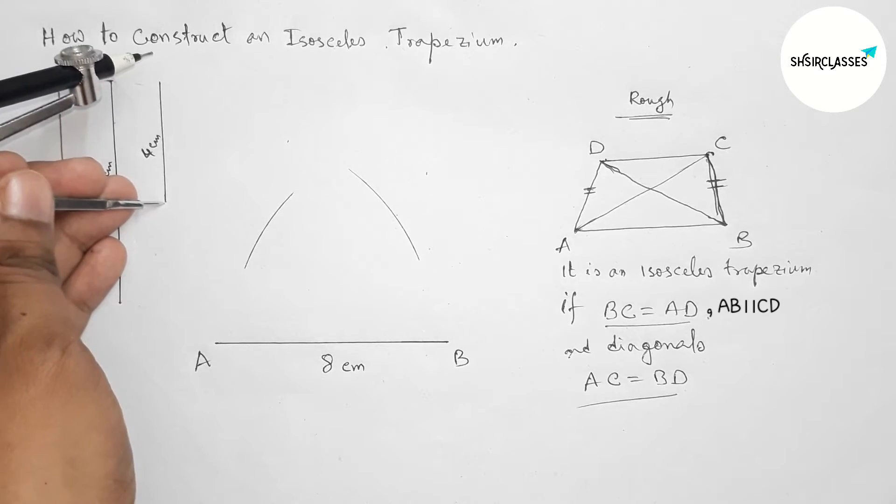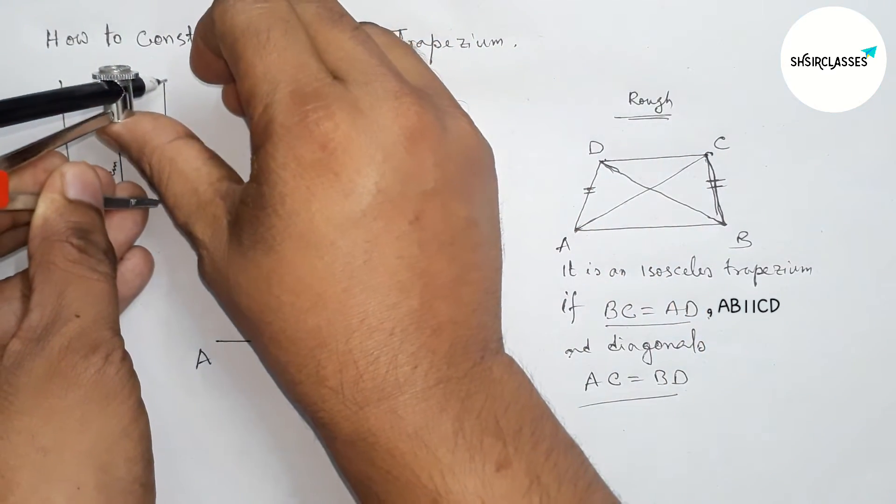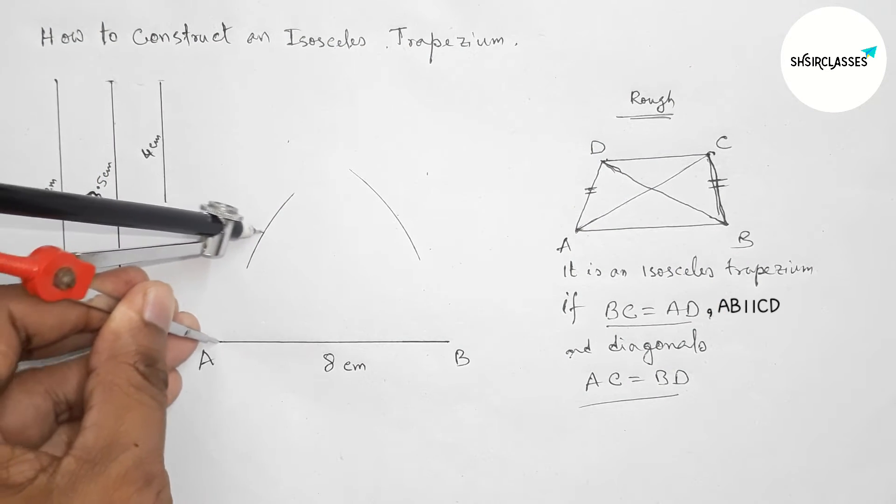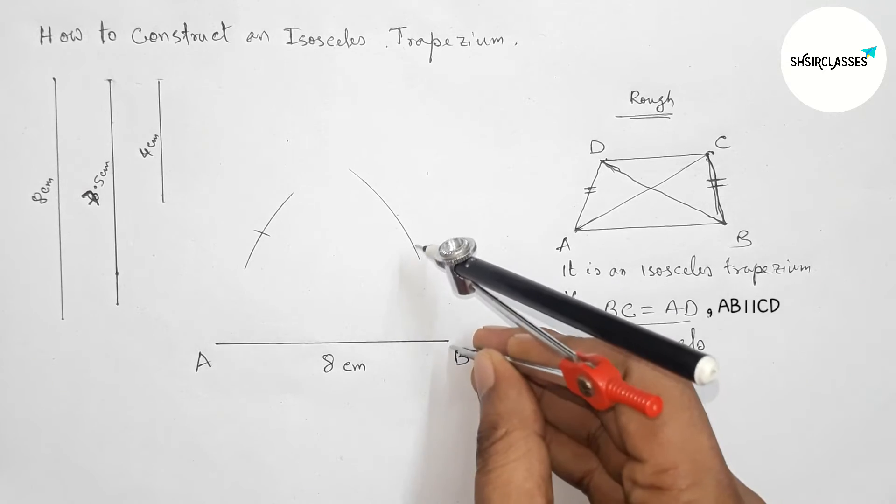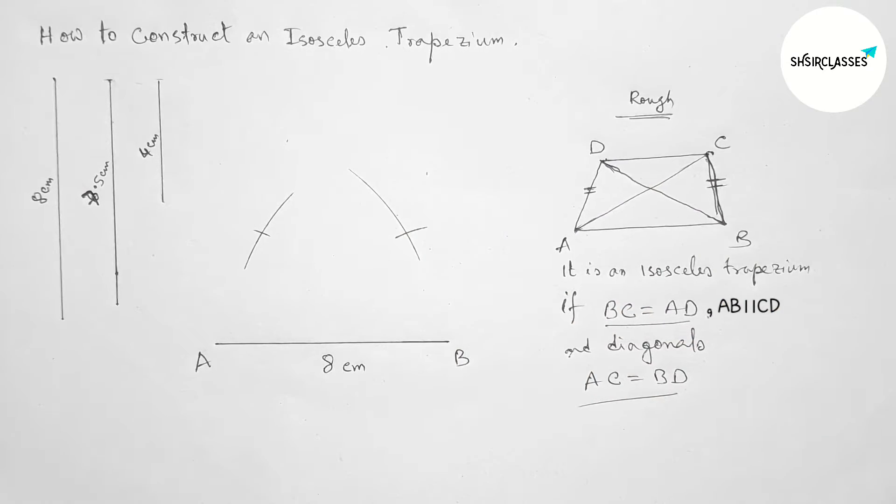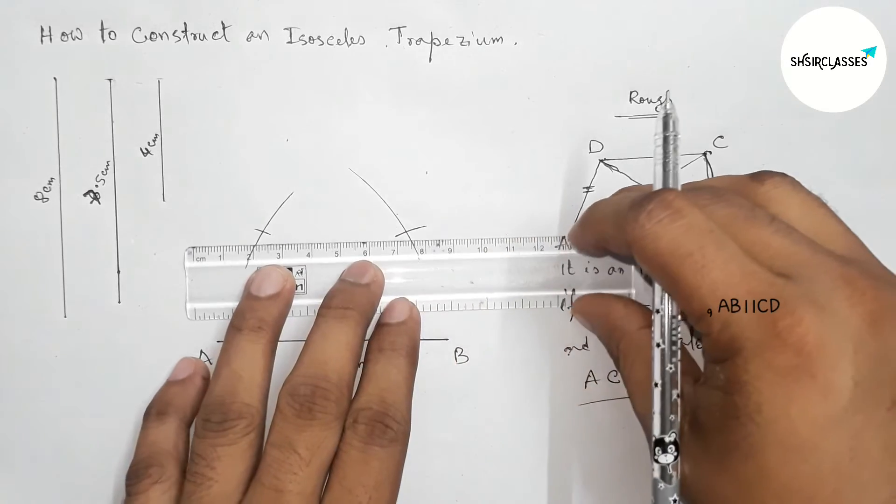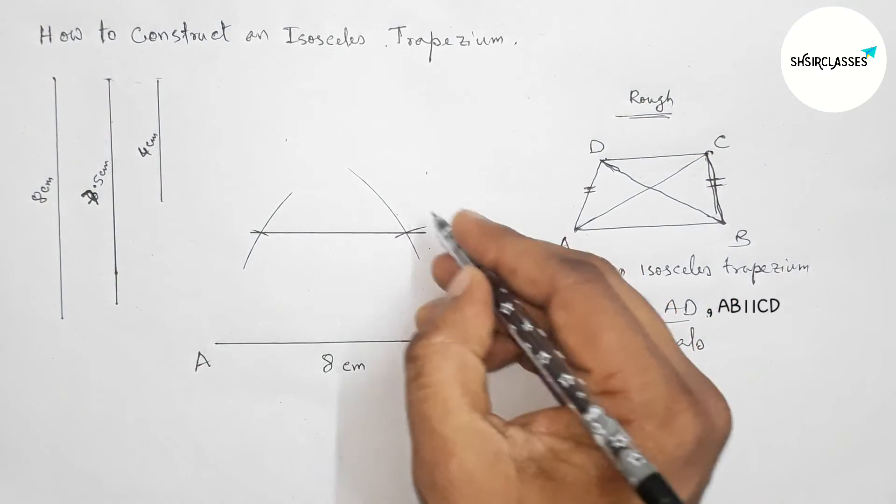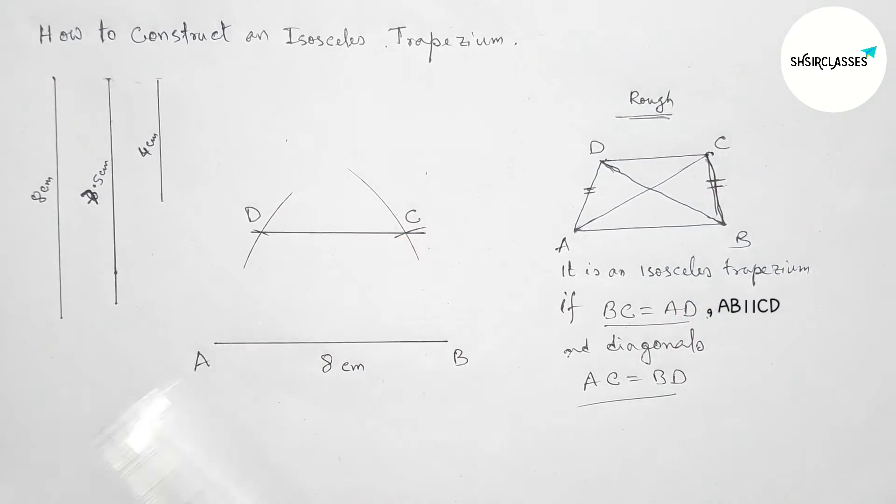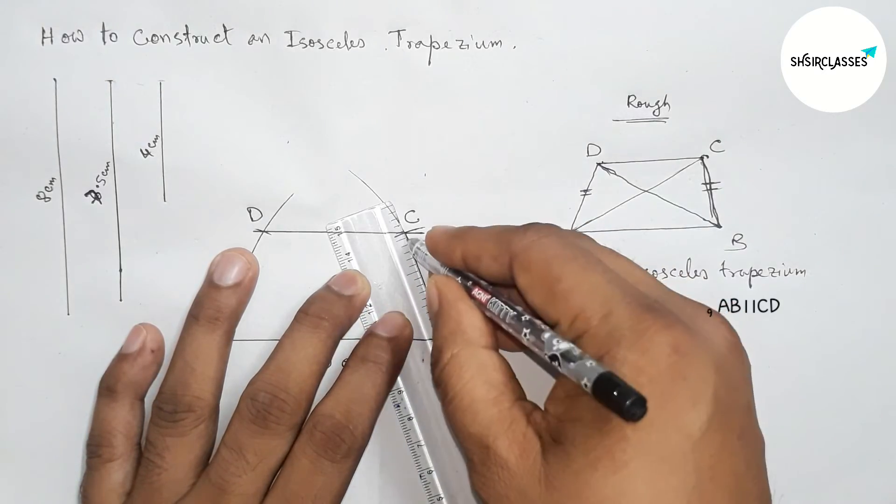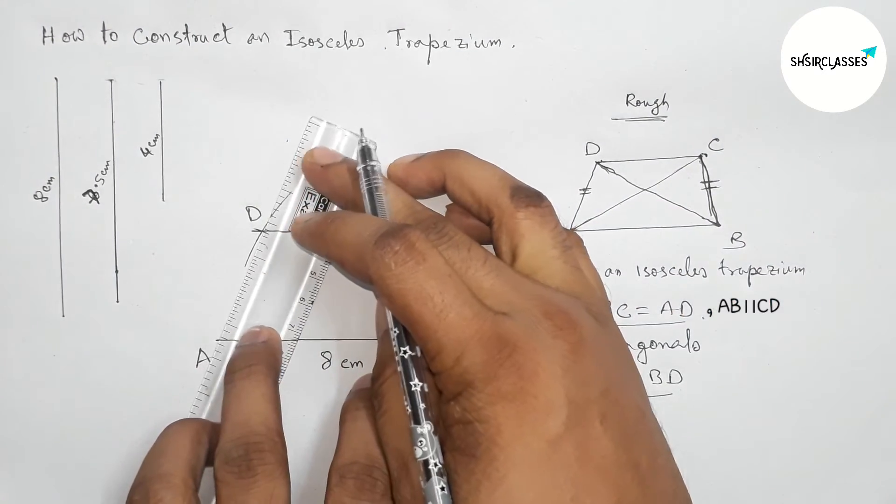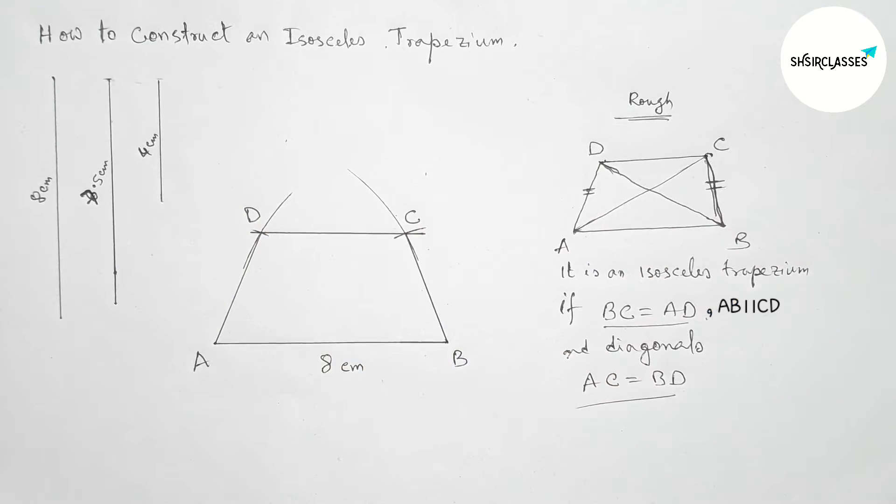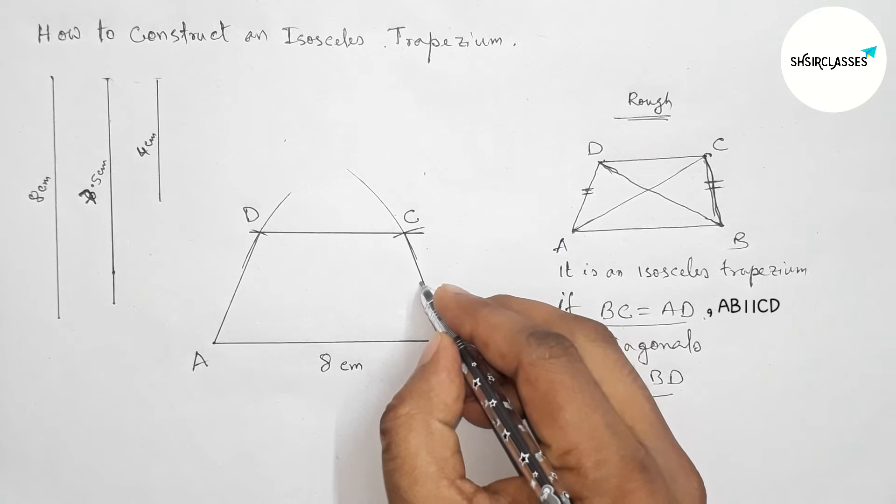Next, taking the length 4 centimeters with the help of compass. Perfect. Now putting the compass on the point A and cut here, and putting the compass on the point B and cut here. So now joining this line, so this is obviously parallel with AB. Now joining BC, then joining AD to get our required isosceles trapezium.